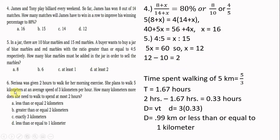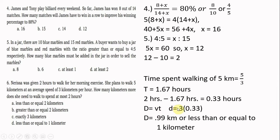Number six: Nerisa was given two hours for her morning walk. She plans to walk 5 kilometers at 3 km/h. How many more kilometers can she walk to spend at most two hours? Time for 5 km is 5 divided by 3 equals 1.67 hours. Remaining time is 2 minus 1.67 equals 0.33 hours. Distance equals speed times time: 3 times 0.33 equals 0.99 km, which is less than or equal to 1 kilometer. The answer is letter D.